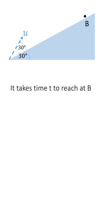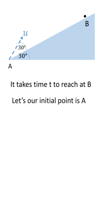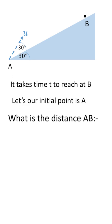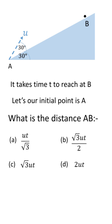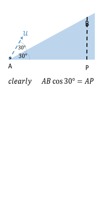Let's say this point is B, and it takes time t to reach B. Our initial point is A. What is the distance AB? Let's solve this question by a simple trigonometric relation — AB·cos30 is equal to AP.